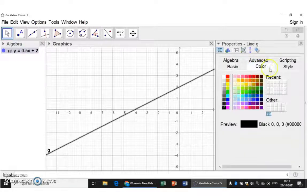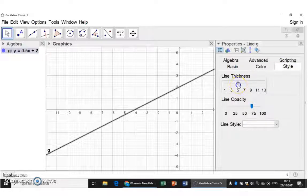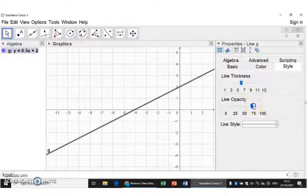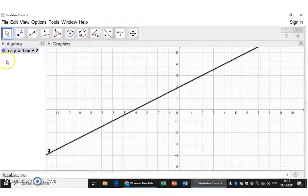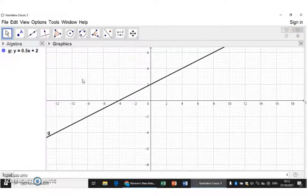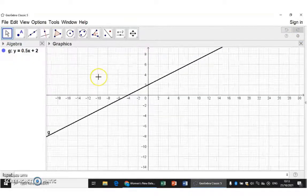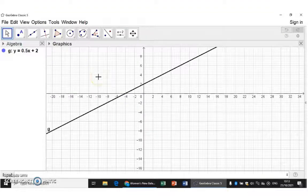You can choose the color and the style so you can make it a bit thicker if you want to. Here we have a straight line that continues forever. You can zoom out and see that this line continues.